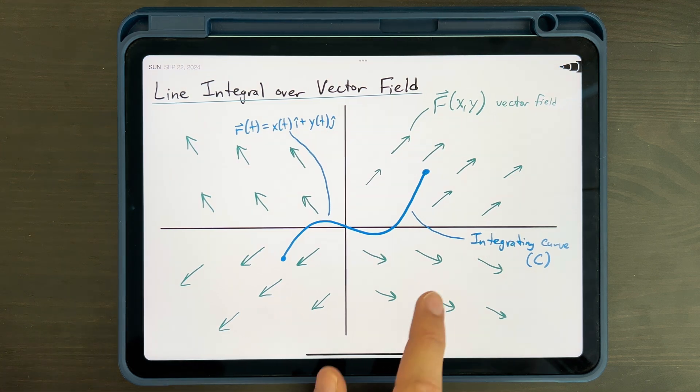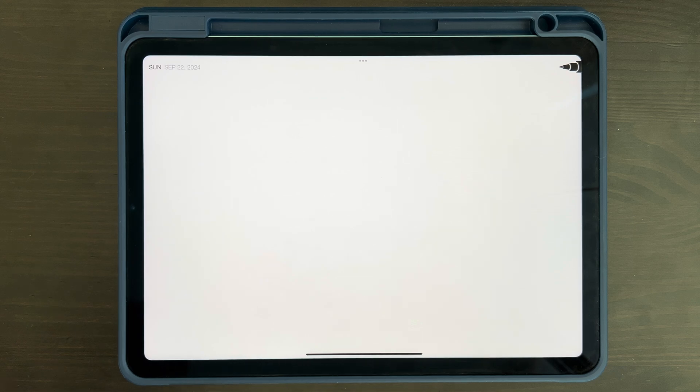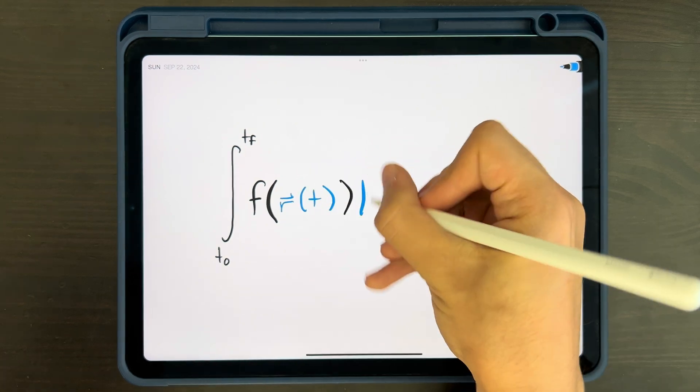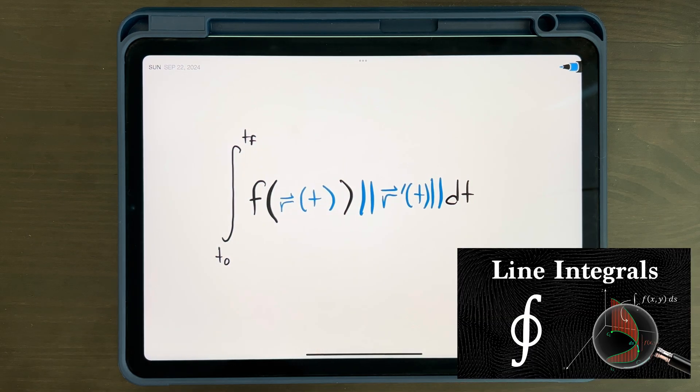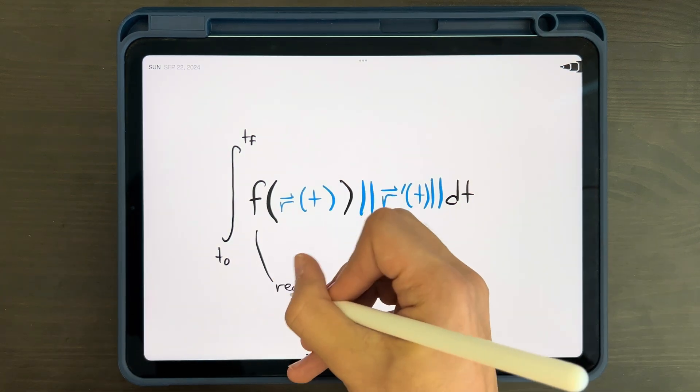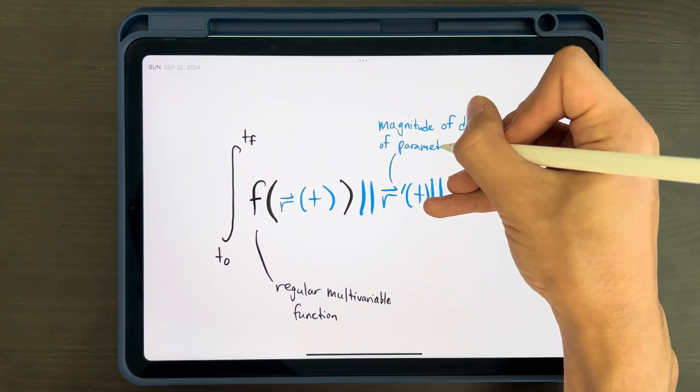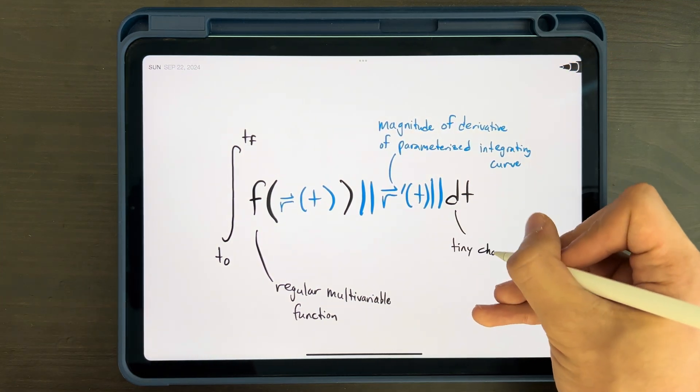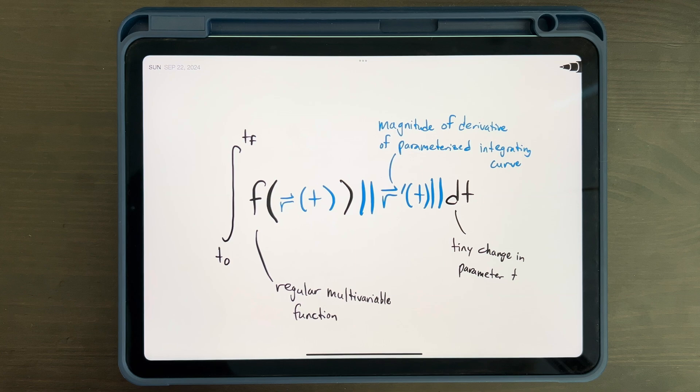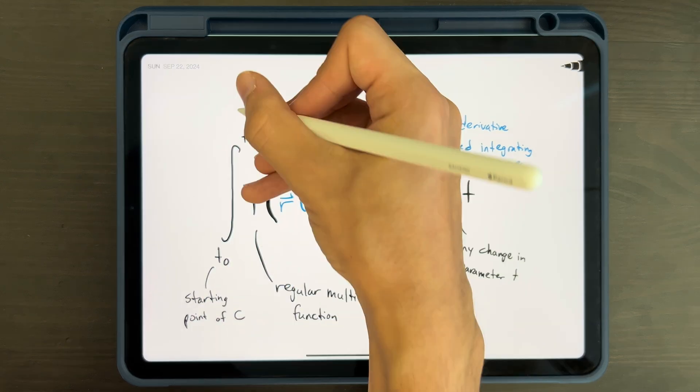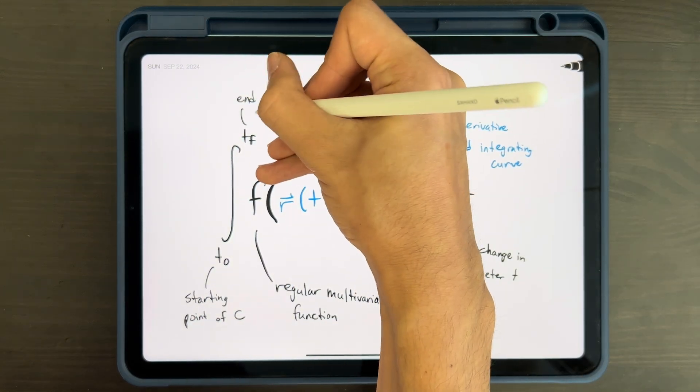To really understand what it means to take the line integral of a vector field, we'll work backwards from the formula for a line integral of a regular function. Here it is. We derived it completely in my previous video. In the integrand, we have our multivariable function f multiplied by the magnitude of the derivative of our parameterized integrating curve times a tiny change in our parameter t, dt. The bounds of this integral, t0 and t final, are the values of t that correspond to the start and endpoints of our integrating curve.